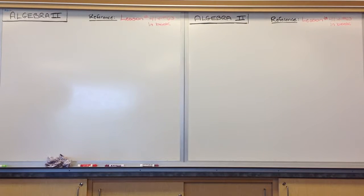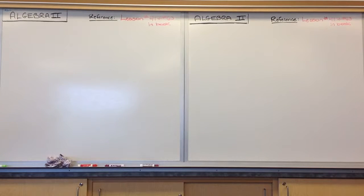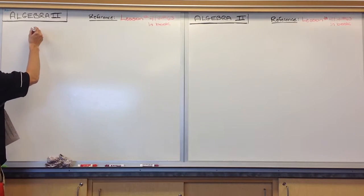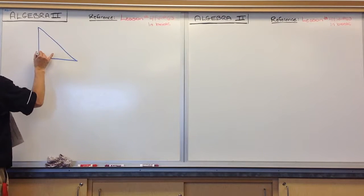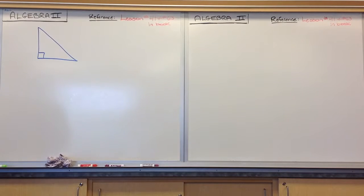Trigonometry deals with triangles, just like it sounds — trig, triangles. We're going to be talking about the two main types of triangles: right triangles and non-right triangles. We're going to really focus over the next few days on right triangles, and we'll build into the non-right triangles after that. There are some properties of right triangles that we need to fully understand and know how to use. One of them is a way of proving that a triangle is a right triangle, and that is through the use of the Pythagorean theorem.